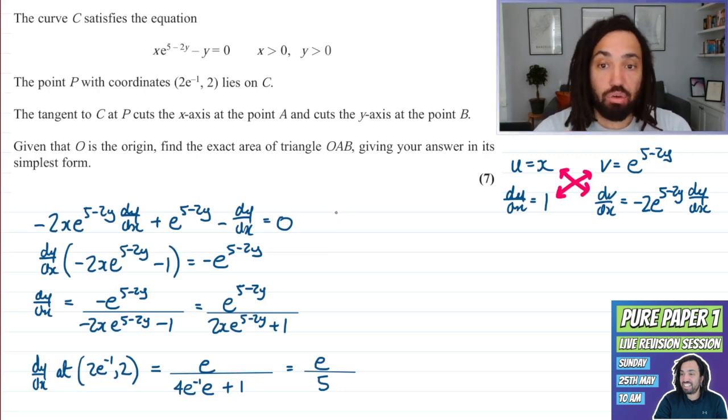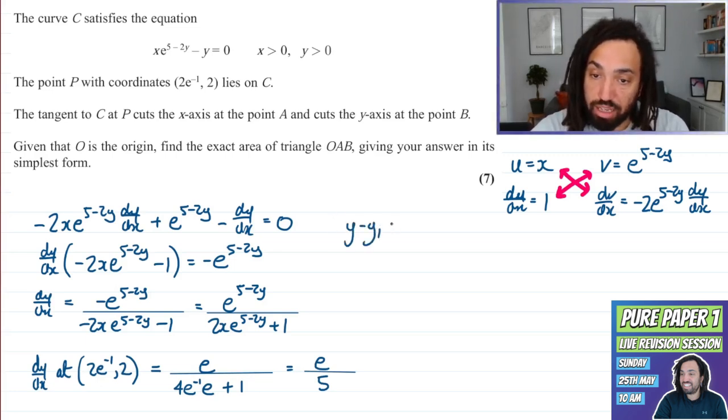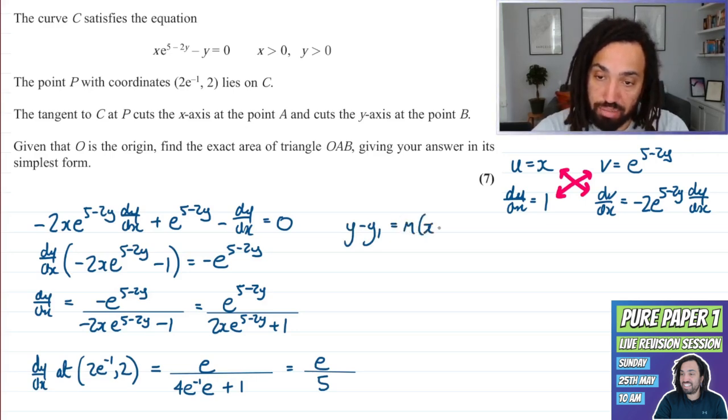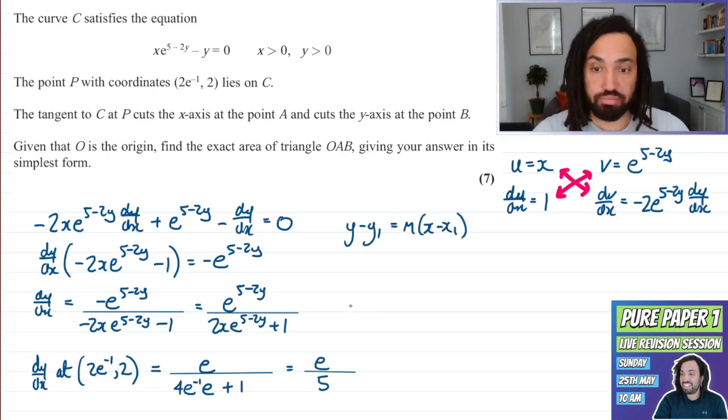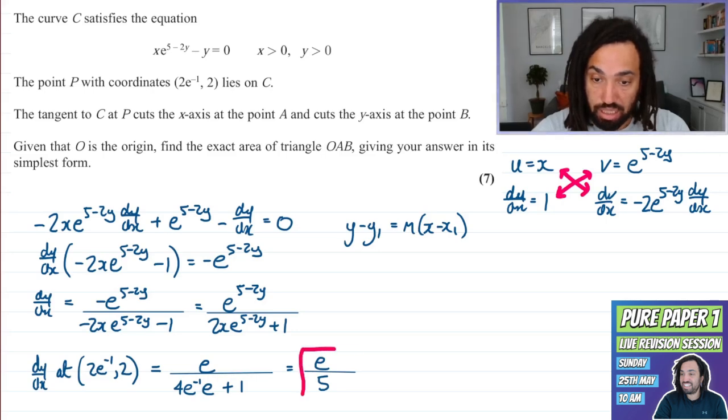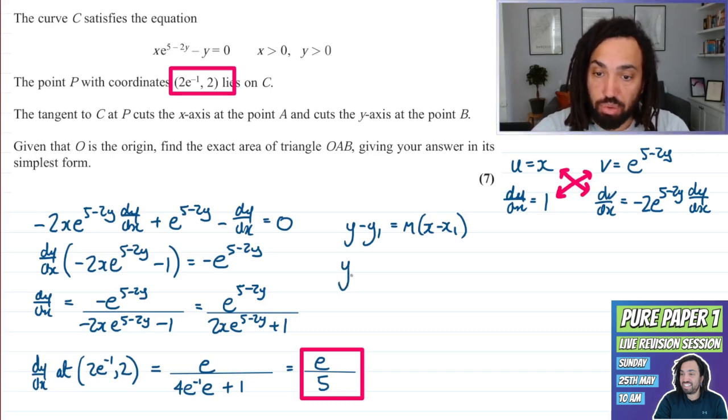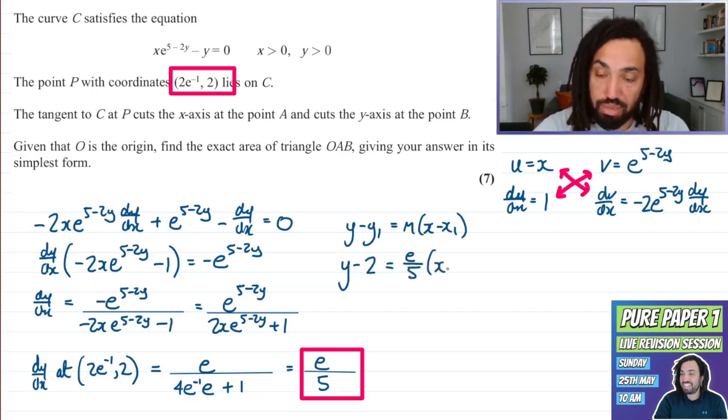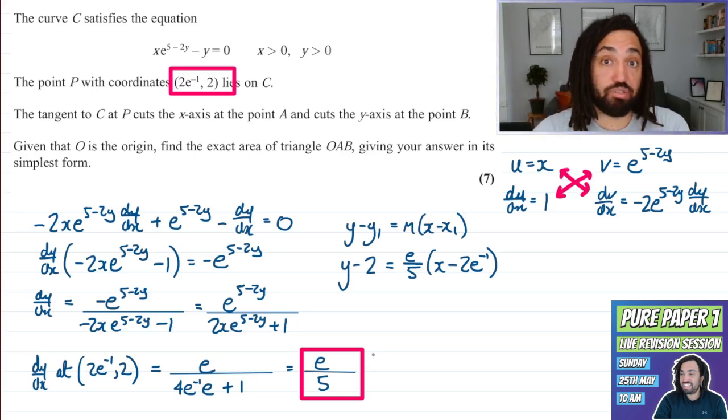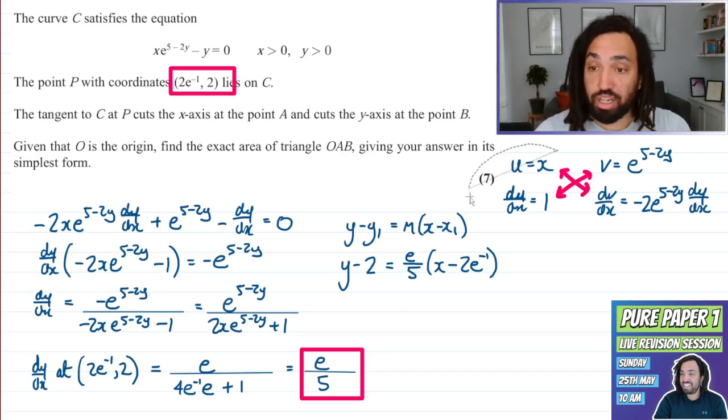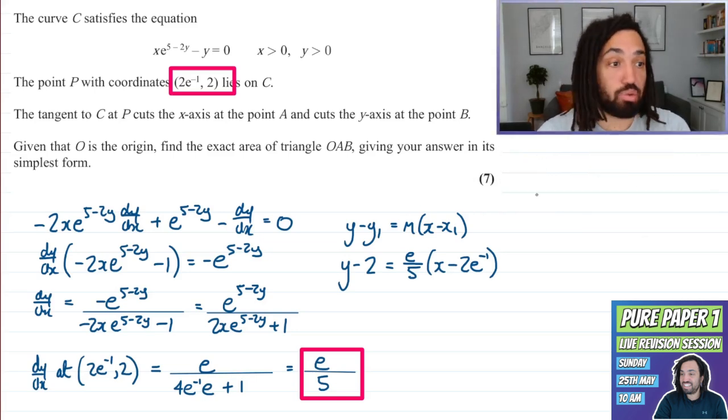Okay now we can use this gradient at the particular point to work out the tangent at that point. So we're going to write Y minus Y1 is equal to M X minus X1 as that is the standard equation for a straight line and we're going to sub in the gradient and we're going to sub in the actual point itself and that will give us the equation of the tangent at that point. So we get Y minus and the Y coordinate is 2 and then that is E over 5 and X minus the X coordinate is 2E to the minus 1. Okay now I could rearrange this into the form Y equals M X plus C but I don't need to and I could just substitute straight in to work out my coordinates for A and B.